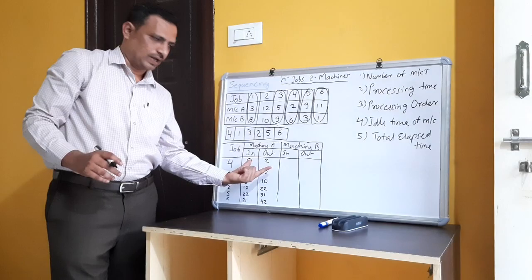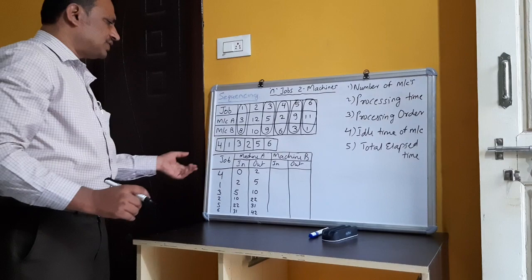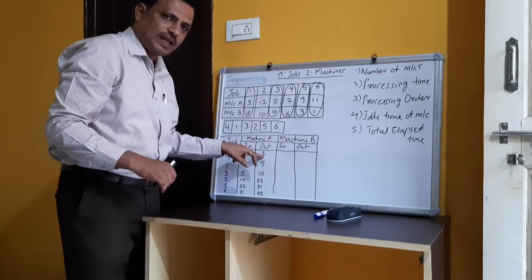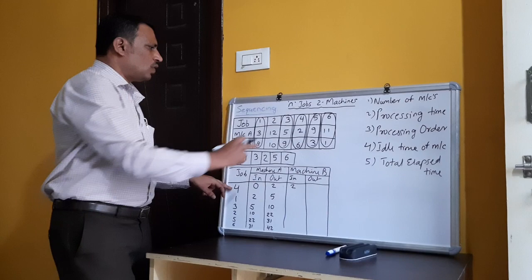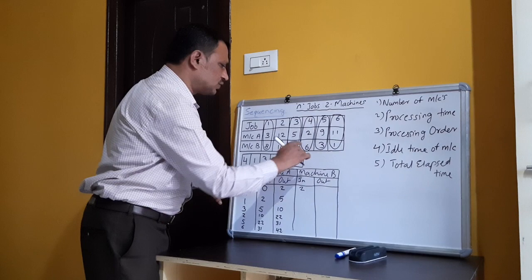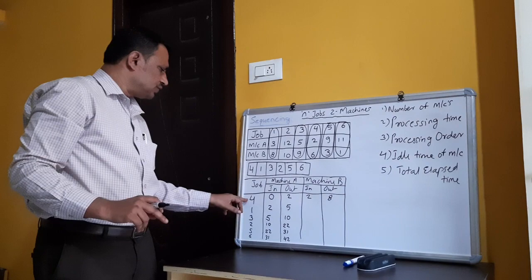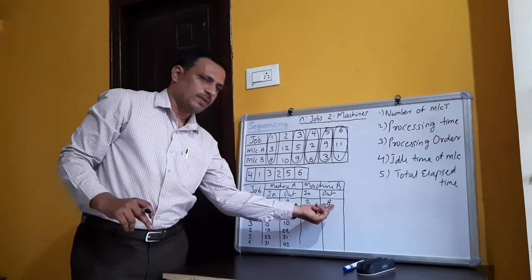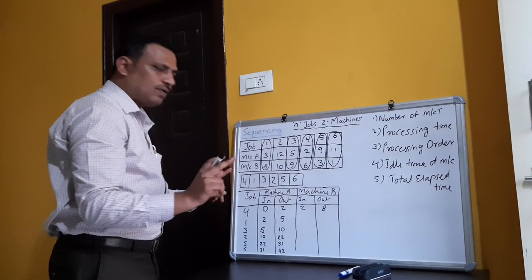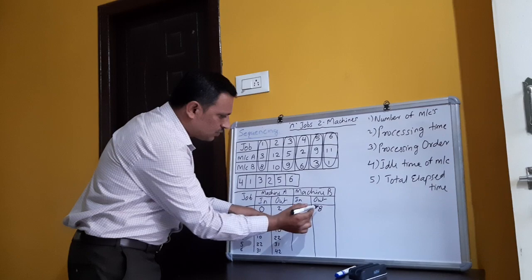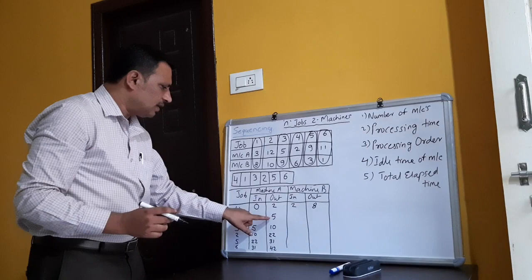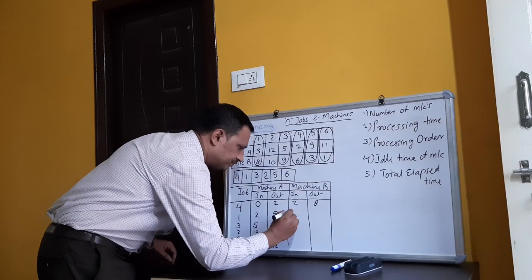For machine B, the in-time for the first row is taken from machine A's out-time for that job. For job four, machine A out = 2, so machine B in = 2. Processing time for job four on machine B is 6, so out = 2 + 6 = 8. When writing the in-time for machine B for the next job, we compare the machine B out-time with the machine A out-time for that next job and take the larger value.